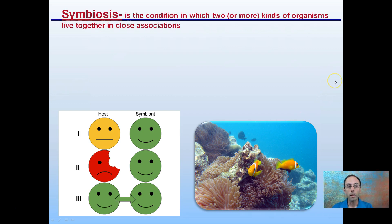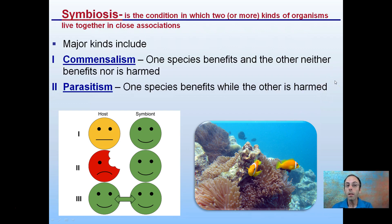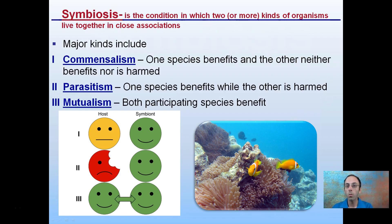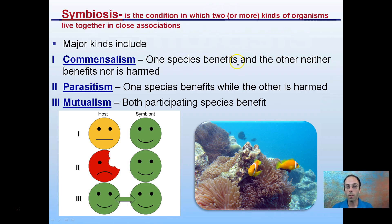Let's define symbiosis first. It's the condition in which two or more kinds of organisms live together in close association with one another. There are major kinds in that. This image gives you a good comparison between the two. We have commensalism, where one species benefits and the other neither benefits nor is harmed.